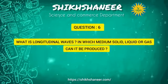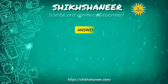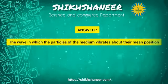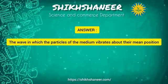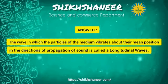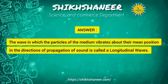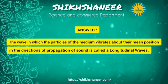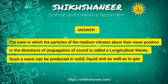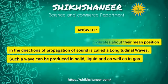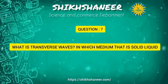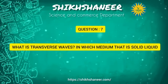What is a longitudinal wave, and in which medium — solid, liquid, or gas — can it be produced? A longitudinal wave is one in which the particles of the medium vibrate about their mean position in the direction of propagation of the wave. Such a wave can be produced in solids, liquids, and gases.